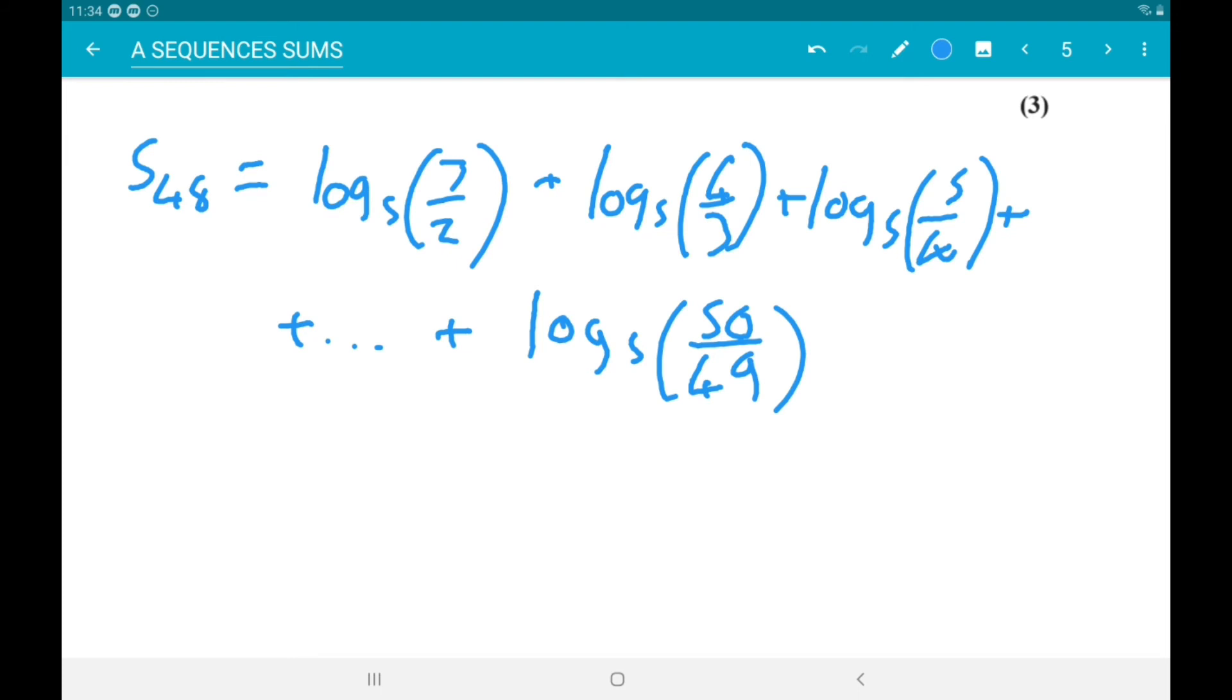So this is actually log base 5 of 3 times 4 times 5 times all the way up to times 50. And on the bottom, we have 2 times 3 times 4 times all the way up to times 49.